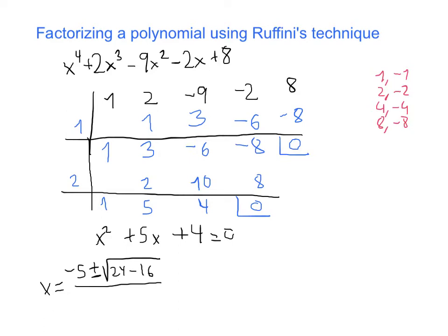Which divided by 2 gives you minus 5... this is 24. Plus or minus the square root of 9 divided by 2, which is equal to minus 5 plus or minus 3 divided by 2. Which is going to give me two results: one is minus 4 and the other one is minus 1.